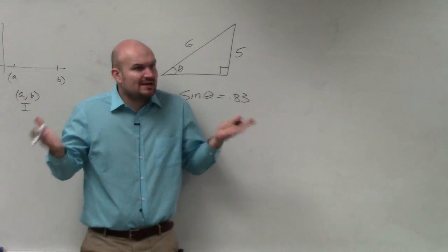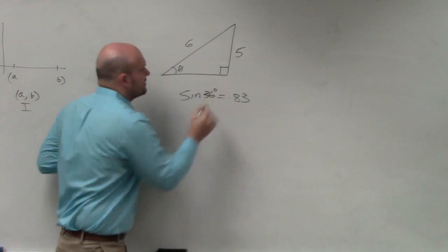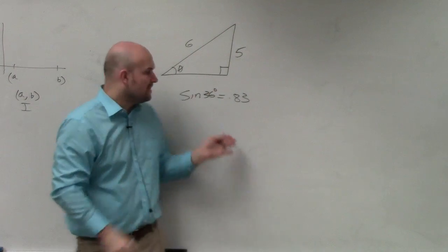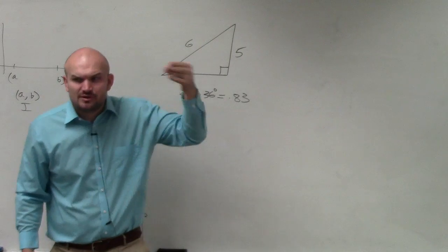Conceptually, what does 0.83 mean? Of whatever angle. Let's just say it's 36 degrees, right? And we're going to do problems like this. But what if my answer, sine of 36 degrees, is 0.83? Conceptually, what does that tell you?